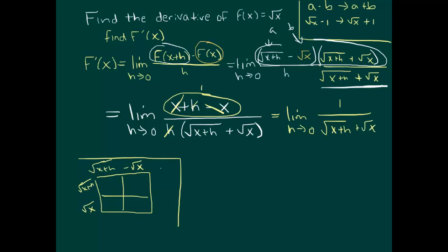And at this point, we can plug in 0 for h. And that turns this into 1 over square root of x plus 0 plus square root of x, and that's 1 over 2 square root of x. So the derivative of square root of x is 1 over 2 square root of x.